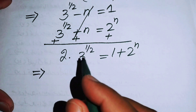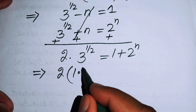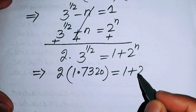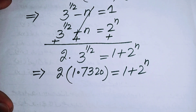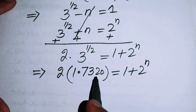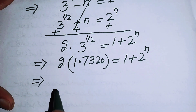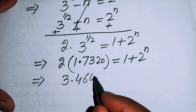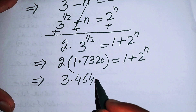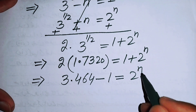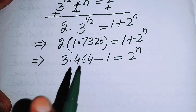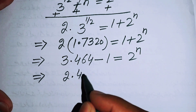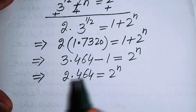Now we simplify numerically. The square root of 3 is approximately 1.7320, so 2 times 1.7320 equals 3.464. Moving the 1 to the left-hand side gives 3.464 minus 1 equals 2 to the power of n, so 2.464 equals 2 to the power of n.